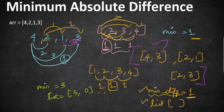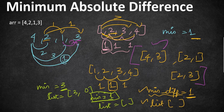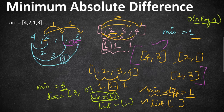If we find a new difference smaller than the current minimum — say the current minimum is three and the new difference is one — we update minimum to one and reset the result list to empty, then add the new pairs. We keep updating as we traverse and finally return the result. This runs in O(n log n) time: log n for sorting and n for the linear traversal to find the pairs.